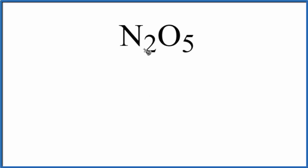In this video we'll find the number of atoms in N2O5. This is dinitrogen pentoxide. So let's write the element symbols down. We have nitrogen and then oxygen. The two, the subscript, that means we have two nitrogen atoms.